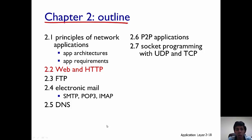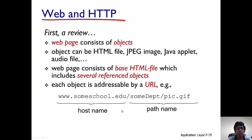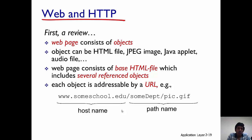Hi everyone. Today we will be talking about HTTP and the web. HTTP is an application-layer protocol. First, let's get a high-level overview of HTTP and the web. Each web page is accessed mainly using the HTTP protocol, and a web page consists of multiple objects. An object in an HTML file could be a JPEG image, a Java applet, an audio file, a video file — it could be a number of things.